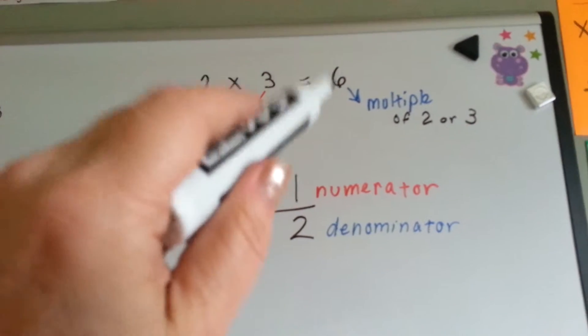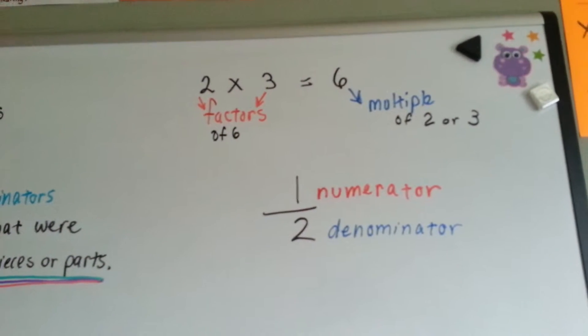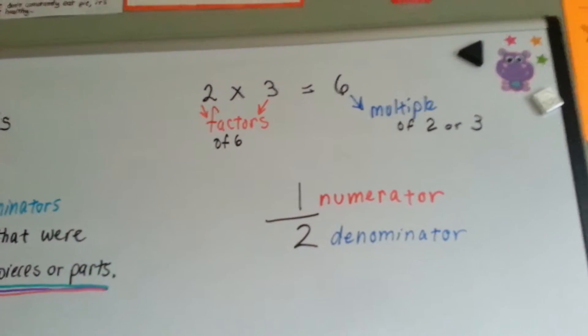I think multiple sixes would be 6, 12, 18. That's multiple sixes. So they're the answers in a multiplication problem. So that brings us here.